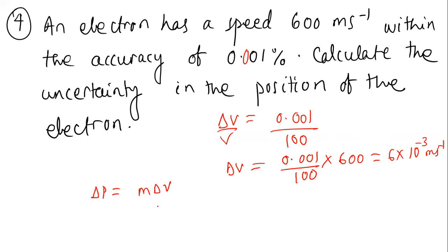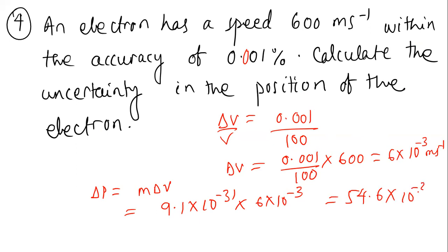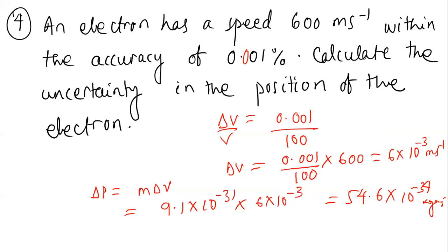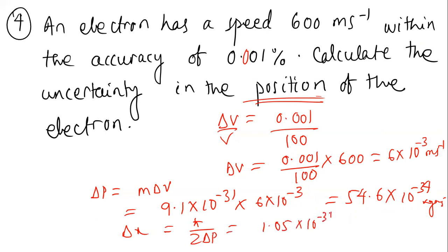As derived in question one, Δp = m·Δv. Substituting: mass of electron 9.1 × 10⁻³¹ kg times Δv = 6 × 10⁻³ gives Δp = 54.6 × 10⁻³⁴ kg·m/s. Then Δx = ℏ/(2·Δp) = 1.05 × 10⁻³⁴ / (2 × 54.6 × 10⁻³⁴) = 9.72 × 10⁻³ m.